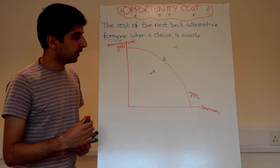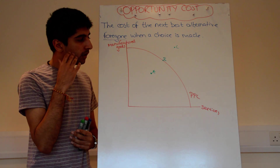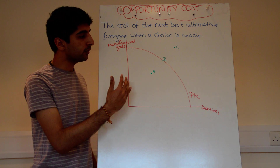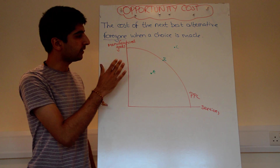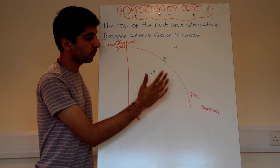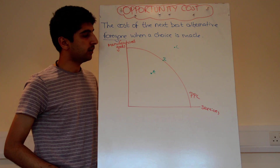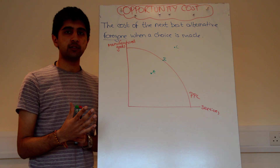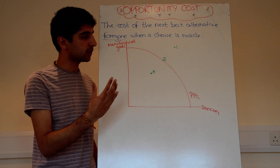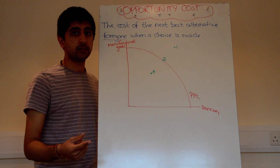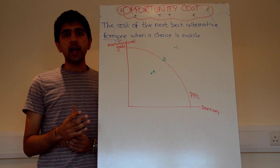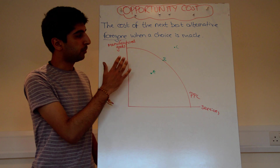A production possibility curve tells us, given a level of scarce resources in the economy, the maximum we can produce of two specific things. In this case, I'm assuming the economy can either produce goods or services. The PPC tells us, given the levels of factors of production in the economy, what's the maximum level that can be produced — how much goods and services can be produced to the maximum level. We're constrained by the level of factors of production.